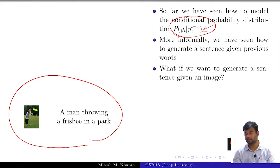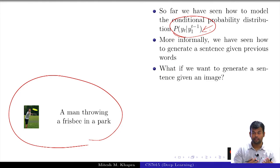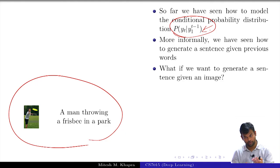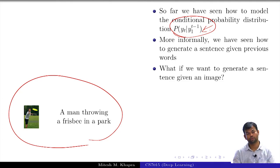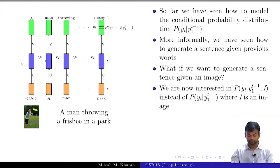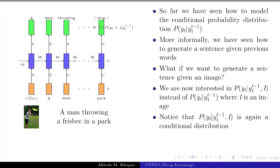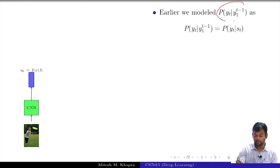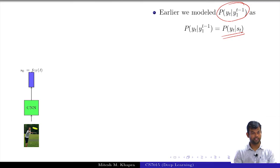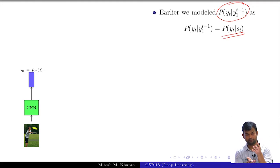This is again a conditional distribution. Earlier we modeled this by saying the whole context y_1 to y_{t-1} is contained in the blue vector S_t. So we replace those variables with the vector. Now we also have the image. The same way that S_t encodes all the information in the previous sequence, we want to represent all the information in the image by some vector.